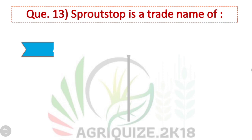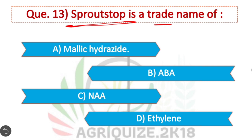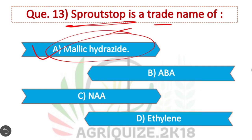Question 13: Sprout Stop is the trade name of — Option A is correct: Maleic hydrazide. This hormone is used to prevent sprouting in onions during storage.